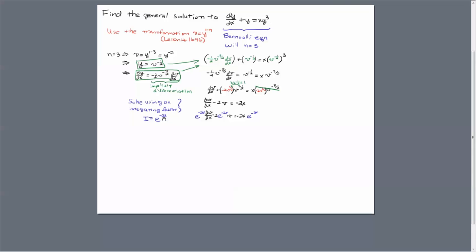The integrating factor e to the minus 2x works, so multiply through by that integrating factor. Collapse the left-hand side. We're going to integrate the right-hand side. We're going to have to use integration by parts.